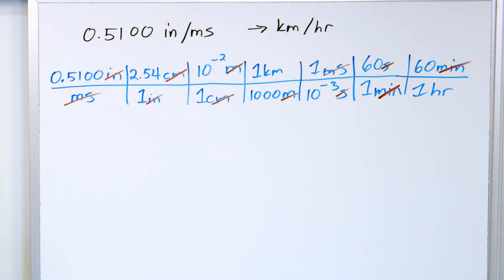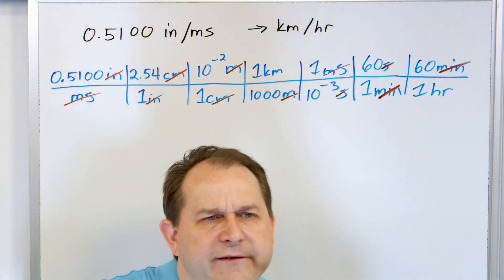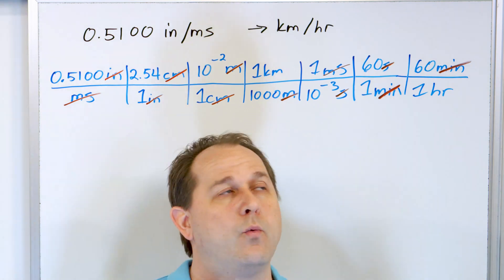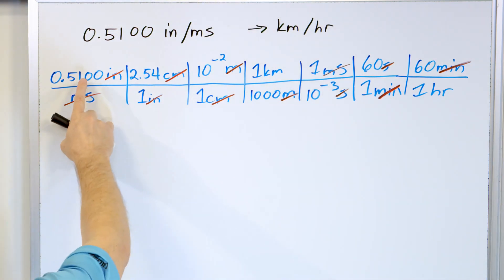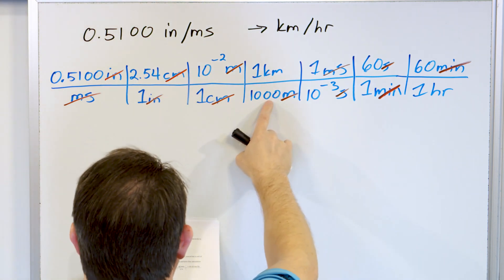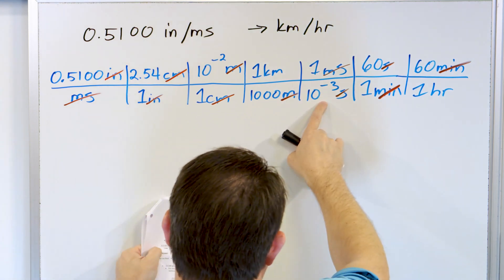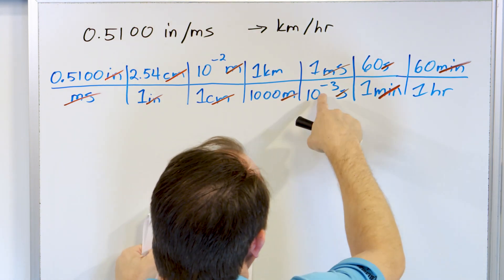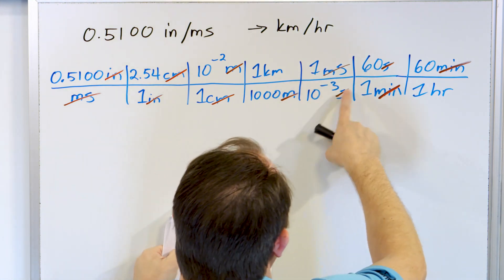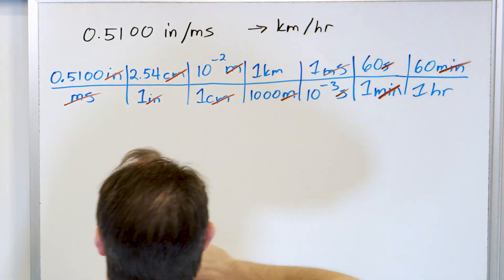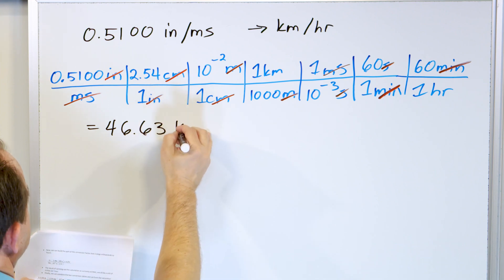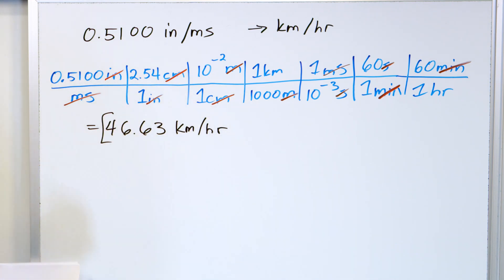Now look at that — all of the units are gone. The only ones left are kilometers on top and hours on the bottom. You just arrange the units so everything cancels except what you want: kilometers per hour. So: 0.5100 times 2.54 times 10 to the minus two, divide by 1,000, divide by 10 to the minus 3, multiply by 60, multiply by 60 again — and the answer is 46.63 kilometers per hour.